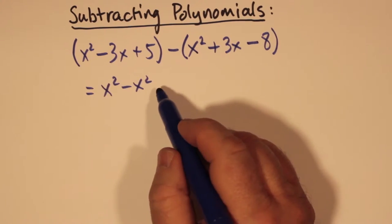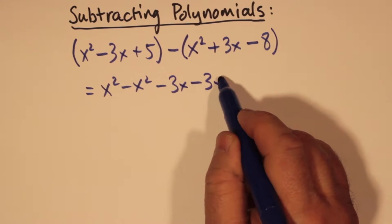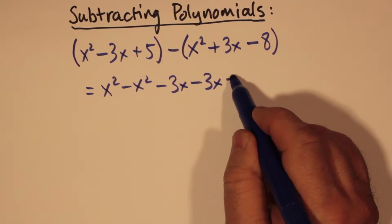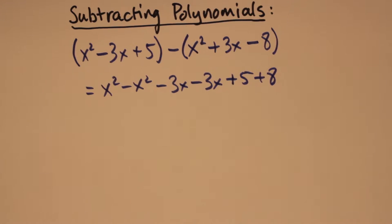Then we gather our like terms. We get x squared minus x squared, and we also notice we get a negative 3x minus 3x. Lastly, we get a 5 minus a negative 8, which is the same thing as 5 plus 8.